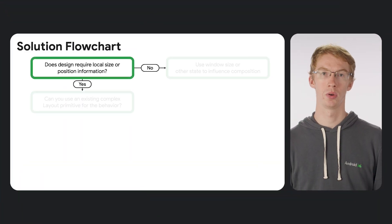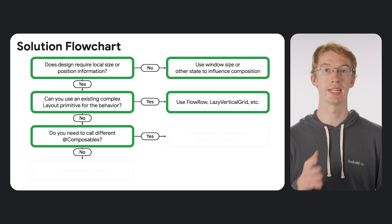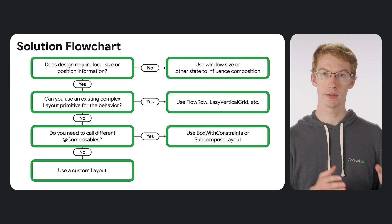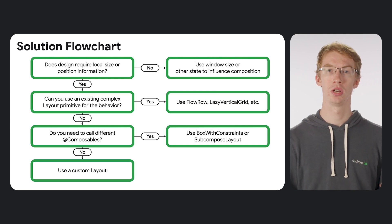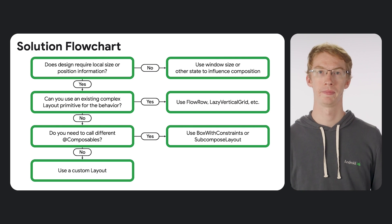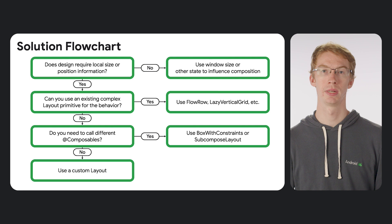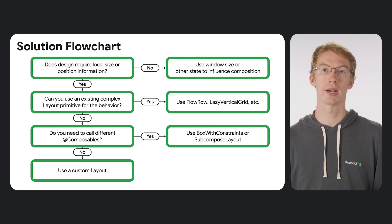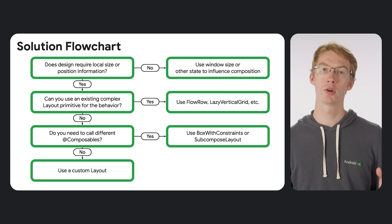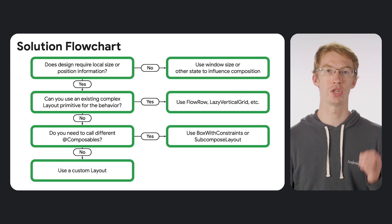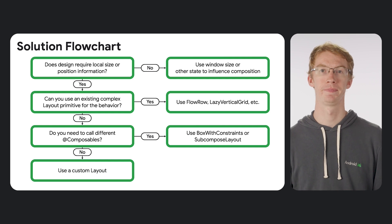Putting everything together, we now have a flowchart for building adaptive layouts that are correct on the first frame without subcomposition. If the decision isn't based on local size information, use window size or other state to change what's in composition. If local size is needed, see if an appropriate layout primitive has built-in behavior meeting your specs. If not, don't be afraid to write a custom layout — it gives you the most control, and you can use intrinsics, skipping placement, and other tools to achieve exactly the adaptive behavior you want. Thank you very much.